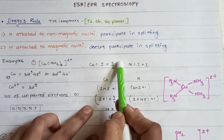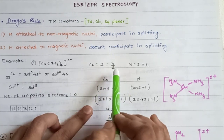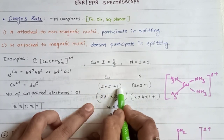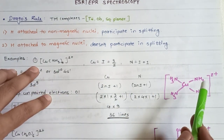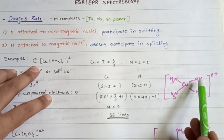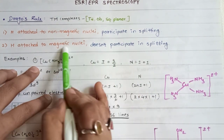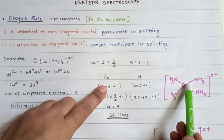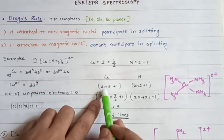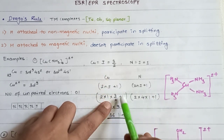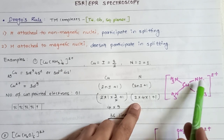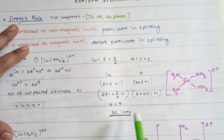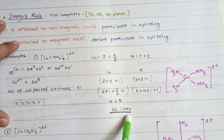Copper's spin quantum number I is 3/2. Now let's calculate hyperfine line splitting using the formula 2nI + 1. Out of all components, copper and nitrogen participate in splitting. Hydrogen does not participate because it is attached to magnetic nuclei. So we consider only copper and nitrogen: 2 × 1 × (3/2) + 1 for copper, and 2 × 4 × 1 + 1 for nitrogen (4 nitrogen atoms with I = 1), giving 4 × 9 = 36 lines.